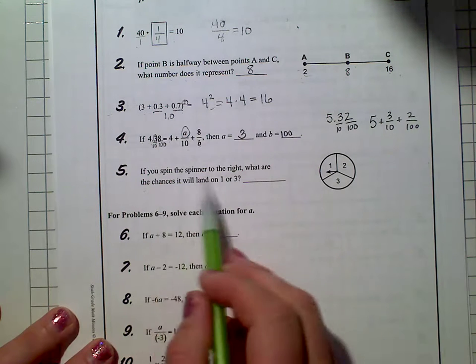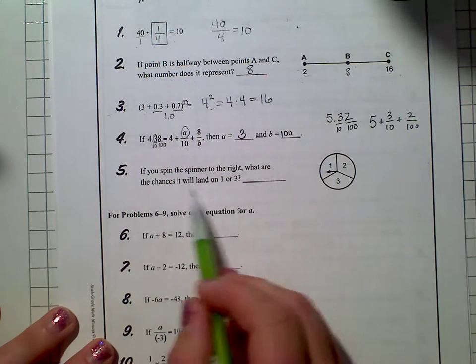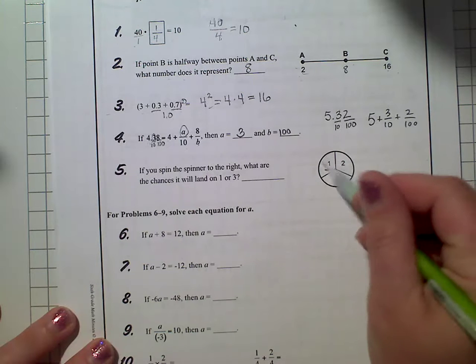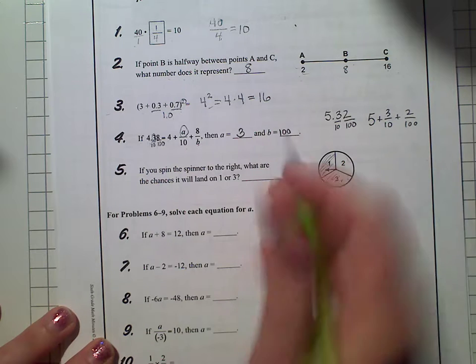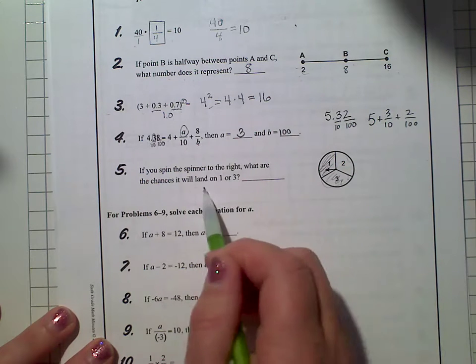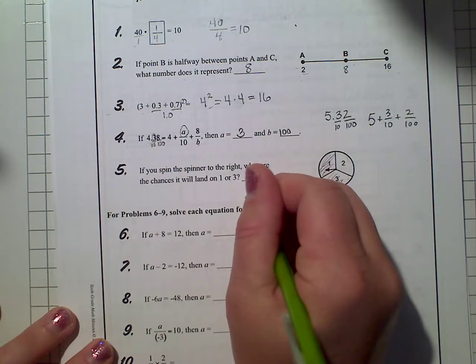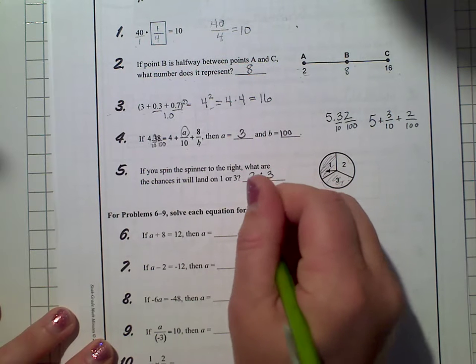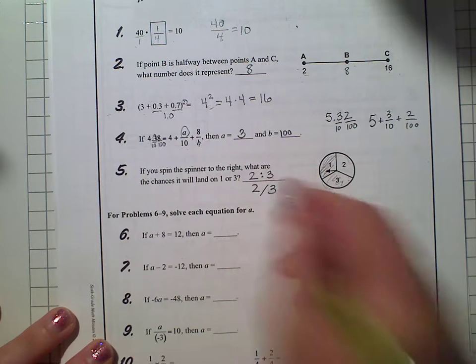If you spin the spinner to the right, what are the chances it will land on a 1 or a 3? Well, there's a 1 and a 3, so you have 2 out of 3. So what are the chances it will land on 1 or 3? 2 out of 3, or you could write 2 thirds, either way.